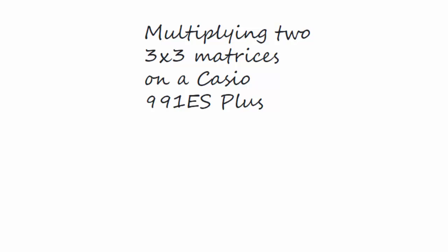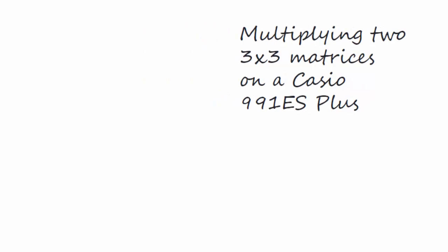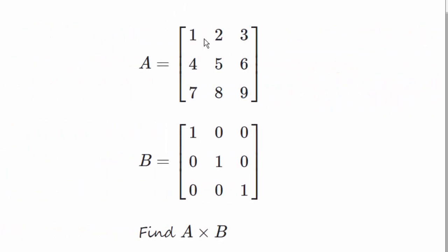In this video we're going to multiply two three by three matrices together on a Casio 991 ES Plus. The matrices are A, which is 1 2 3, 4 5 6, 7 8 9, and the matrix B is the identity matrix. So multiplying A by B, we're going to get an answer that's the same as A.